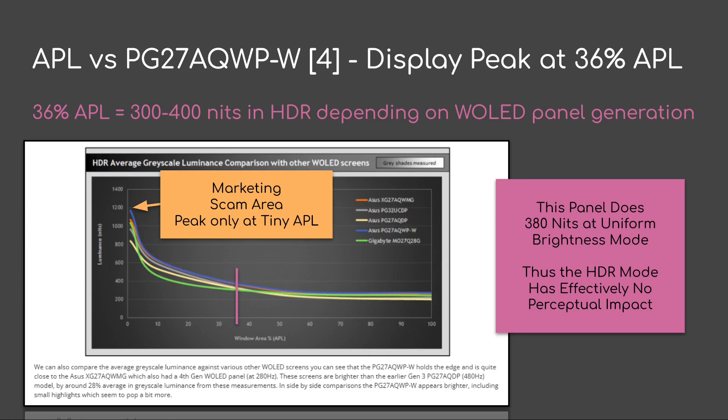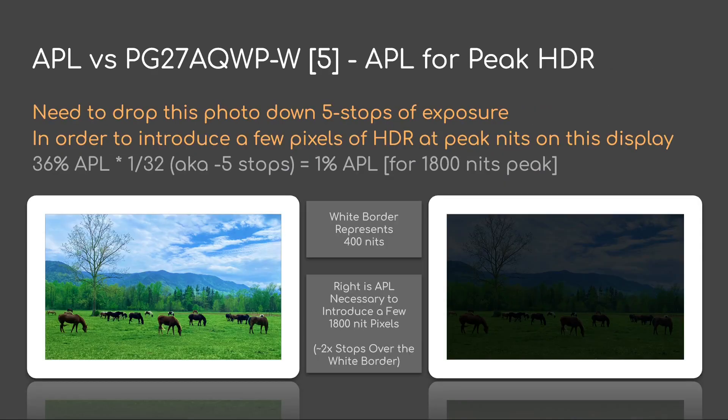Note that the panel we're looking at does 380 nits at uniform brightness mode, and thus maybe 380 nits at uniform brightness mode versus closer to 400 in the HDR mode. Under that context, the HDR mode is effectively having no perceptual impact on the brightness.